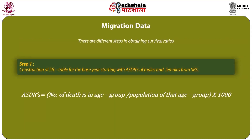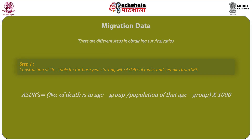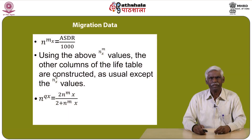There are different steps in obtaining survival ratios. Step 1 is the construction of a life table for the base year. Starting with age-specific death rates of males and females from SRS, the age-specific death rate equals the number of deaths in an age group divided by the population of that age group, multiplied by 1000 as a constant. N_mx equals the age-specific death rate divided by 1000. Using these N_mx values, the other columns of the life table are constructed as usual. N_qx equals 2·N_mx divided by (2 + N_mx).